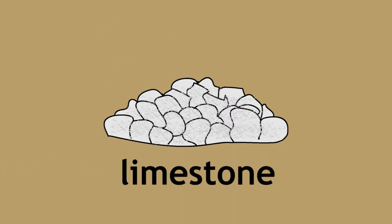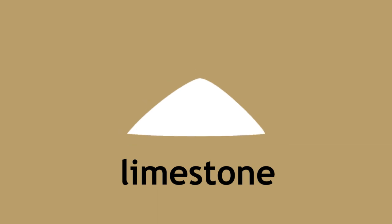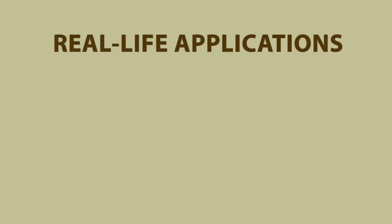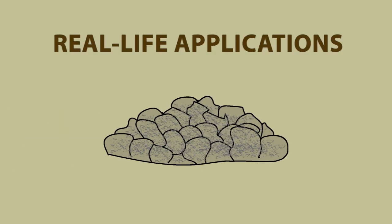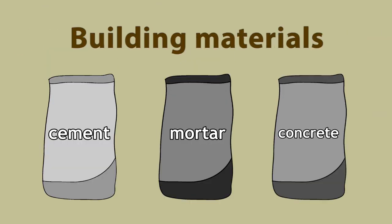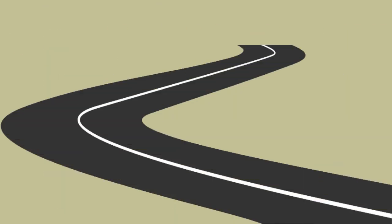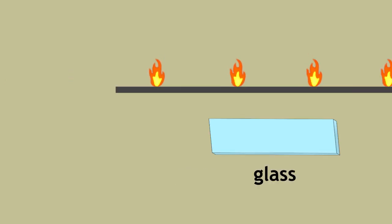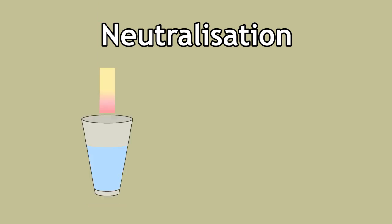Finally, as limestone is white, it can be crushed into a powder and used in paints and toothpaste as a colouring agent. In summary, there are many real-life applications and usages for limestone, including but not limited to construction materials. Limestone can be used to help pave roads, and used as a component in the formation of certain different types of glass, and even to neutralize acidic waters and soils.